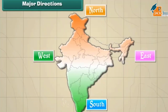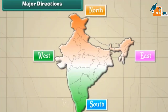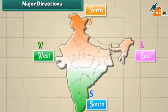Major directions: there are four main directions. They are North, East, South, and West. The four letters N, E, S, and W represent these directions.